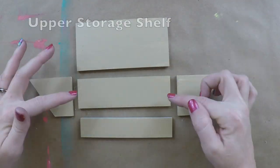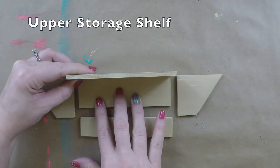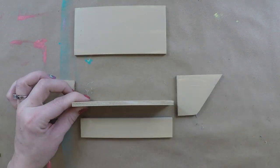Now for the upper storage shelf, lay all your pieces out like this, and follow how I attach them.